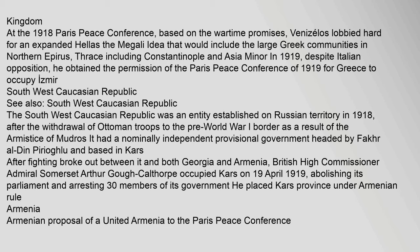South West Caucasian Republic: The South West Caucasian Republic was an entity established on Russian territory in 1918, after the withdrawal of Ottoman troops to the pre-World War I border as a result of the armistice of Mudros. It had a nominally independent provisional government headed by Fakir al-Din Piriyolu and based in Kars. After fighting broke out between it and both Georgia and Armenia, British High Commissioner Admiral Somerset Arthur Gough Calthorpe occupied Kars on 19 April 1919, abolishing its parliament and arresting 30 members of its government. He placed Kars Province under Armenian rule.